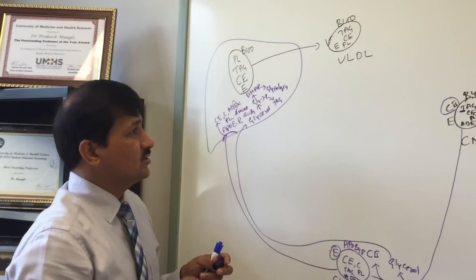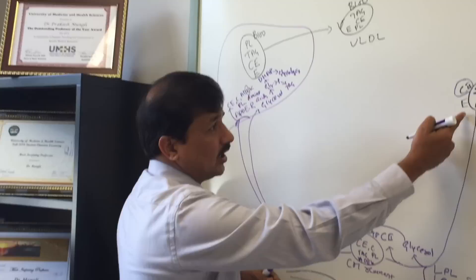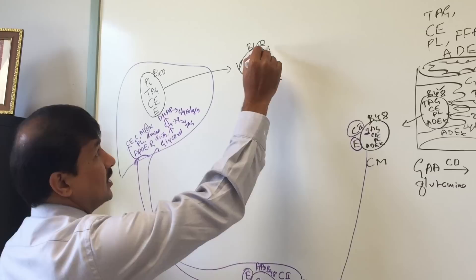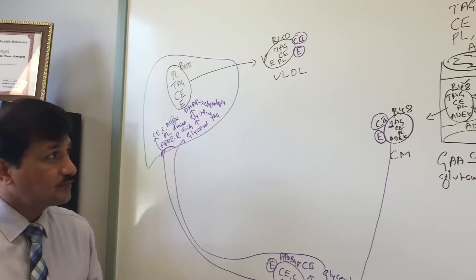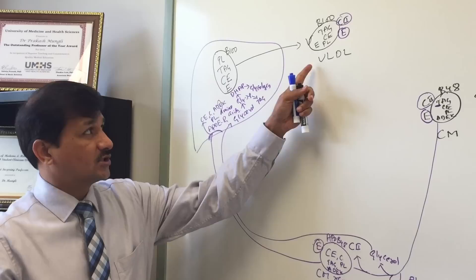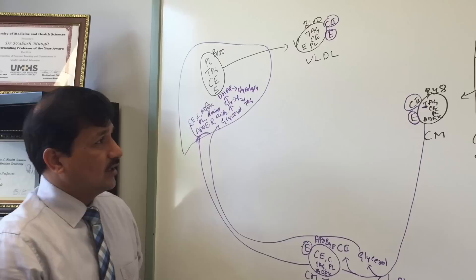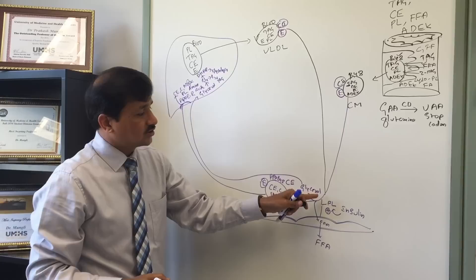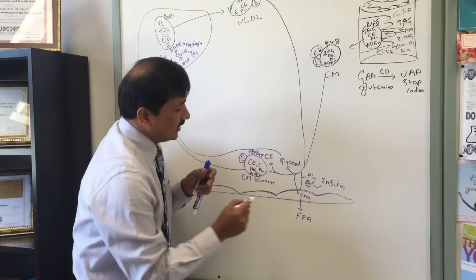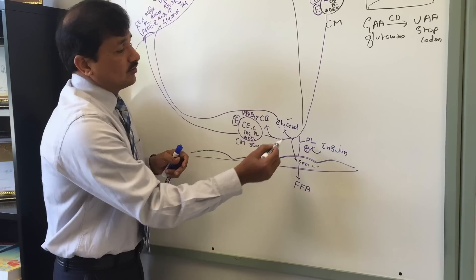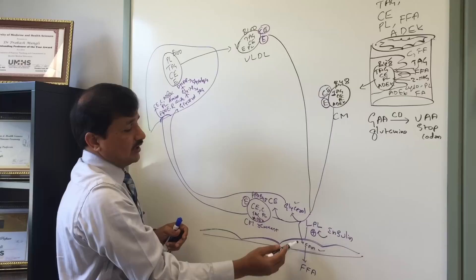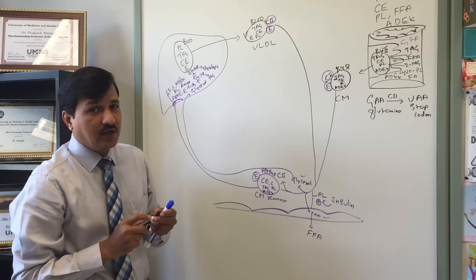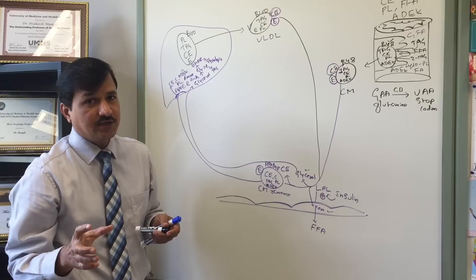The nascent VLDL is secreted into the circulation. It contains triacylglycerol as its major component, plus cholesterol ester, phospholipid, vitamin E, and ApoB100 on the surface. Like the chylomicron, VLDL acquires ApoC2 and ApoE from HDL to become a mature VLDL. This mature VLDL passes through LPL attached to the endothelium, which degrades its triacylglycerol, releasing free fatty acids taken up by peripheral tissues and glycerol.